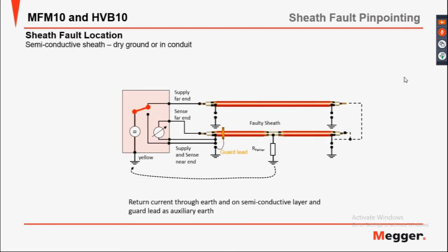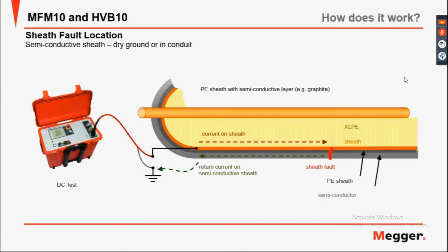Sheet fault location: conductive sheath, dry or ground wire conduit for ducts and systems, return current through the earth. Semiconductor sheath with dry ground wire in a conduit.